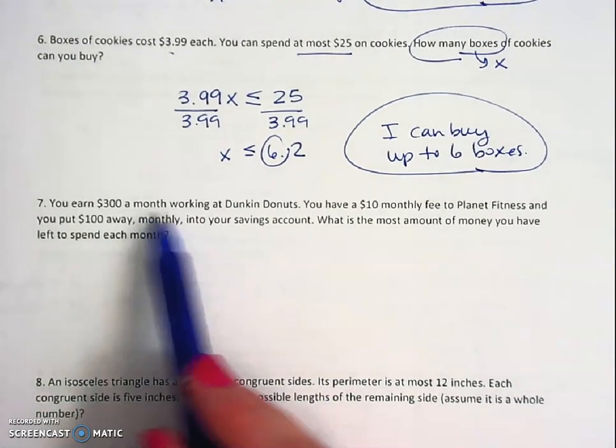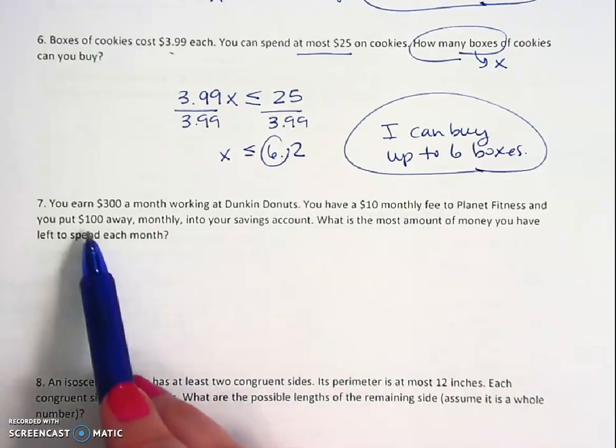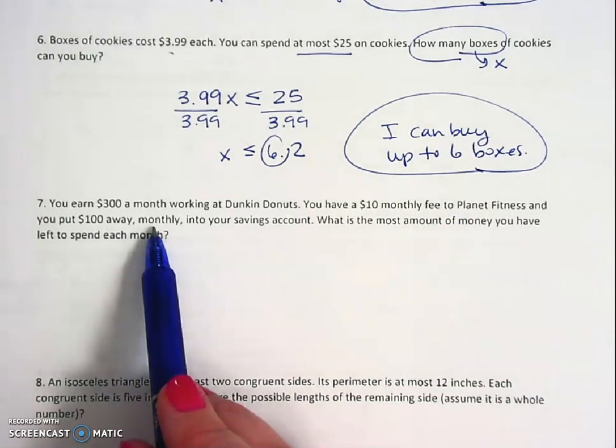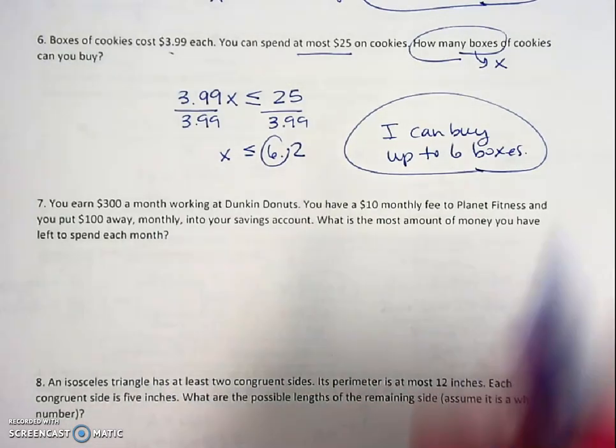Number seven: you earn $300 a month working at Dunkin, you have a $10 monthly fee to Planet Fitness, and you put $100 away monthly. What is the amount of money you have left to spend each month?